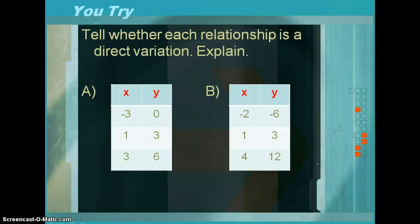So for the you-try, tell whether each relationship is a direct variation and explain. So you have the two following charts of negative 3, 0, 1, 3, 3, 6, and then negative 2, negative 6, 1, 3, and 4, 12.